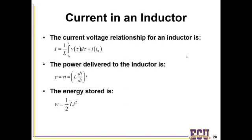Based upon the V equals L·di/dt relationship, you can find current using a very similar integral to what we had with capacitors — except here you integrate V to get I, rather than the other way around. Similarly, instantaneous power is V times I. Since V equals L·di/dt, the power delivered to the inductor is L·(di/dt)·I. And the energy stored in an inductor is one half L·I squared.